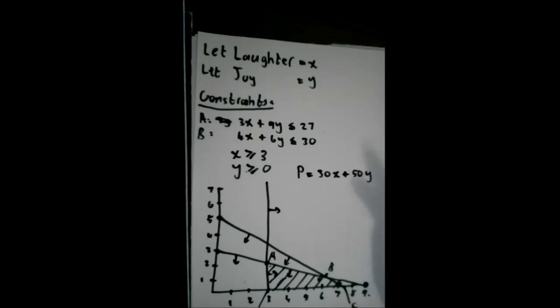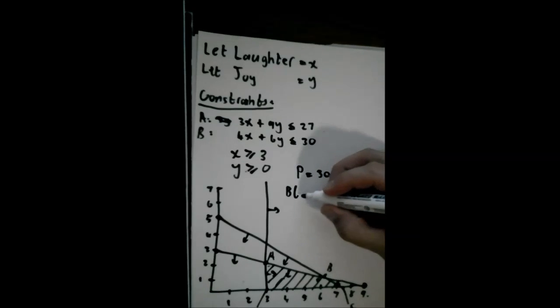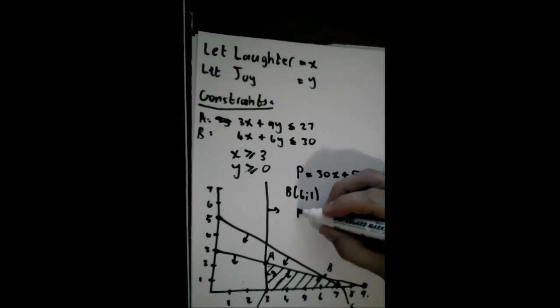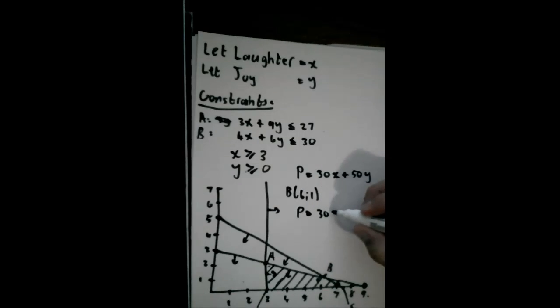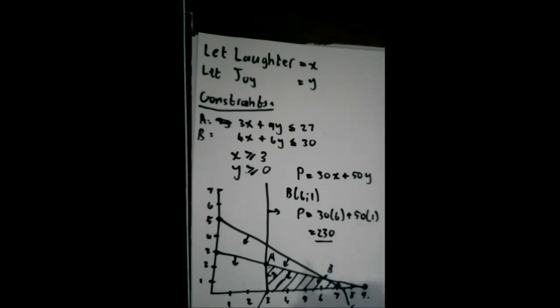Now, two ways to do that. We can either just do it with the gradient function that you probably learned in high school, or you could just substitute each point in its own turn and see which one yields the highest value for P. You'll find that this point B here is at the point six and one. If we substitute that into this optimal value equation, we'll find P equals 30 times six plus 50 times one, which is equal to 230. And that is the highest value. All the others we substitute in are less than 230. So that is our optimal solution to this linear programming problem.